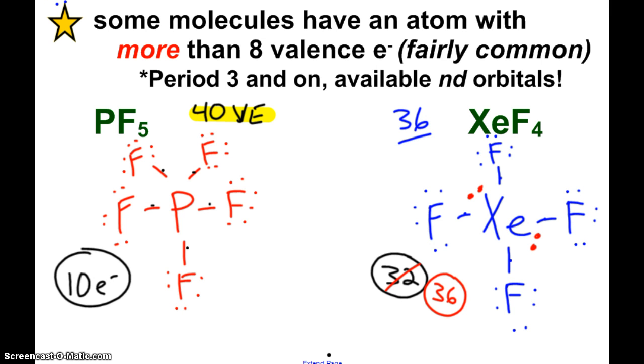So what we have to do is adjust this by adding lone pairs around xenon or making double or triple bonds. Well, we know that even though we can get these noble gases to form bonds, they're only going to form single bonds. So I go back and I add lone pairs on the xenon. So there's two lone pairs on xenon. And xenon's okay with that. It has 8, 9, 10, 11, 12 electrons around it, and it's going to be just fine.